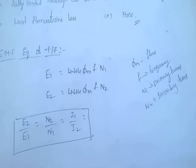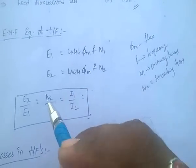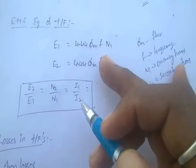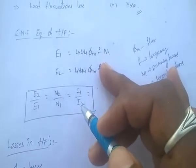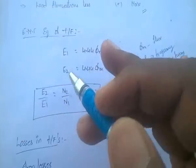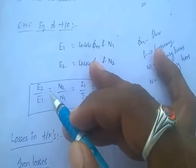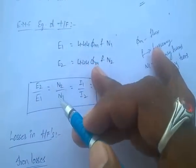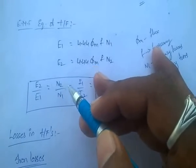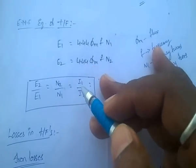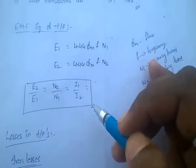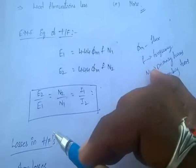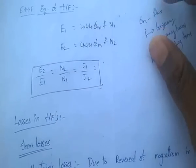The important relation is: E2 by E1 equals N2 by N1, which equals I1 by I2. This relation — voltage ratio equals turns ratio equals inverse current ratio — is very, very important.